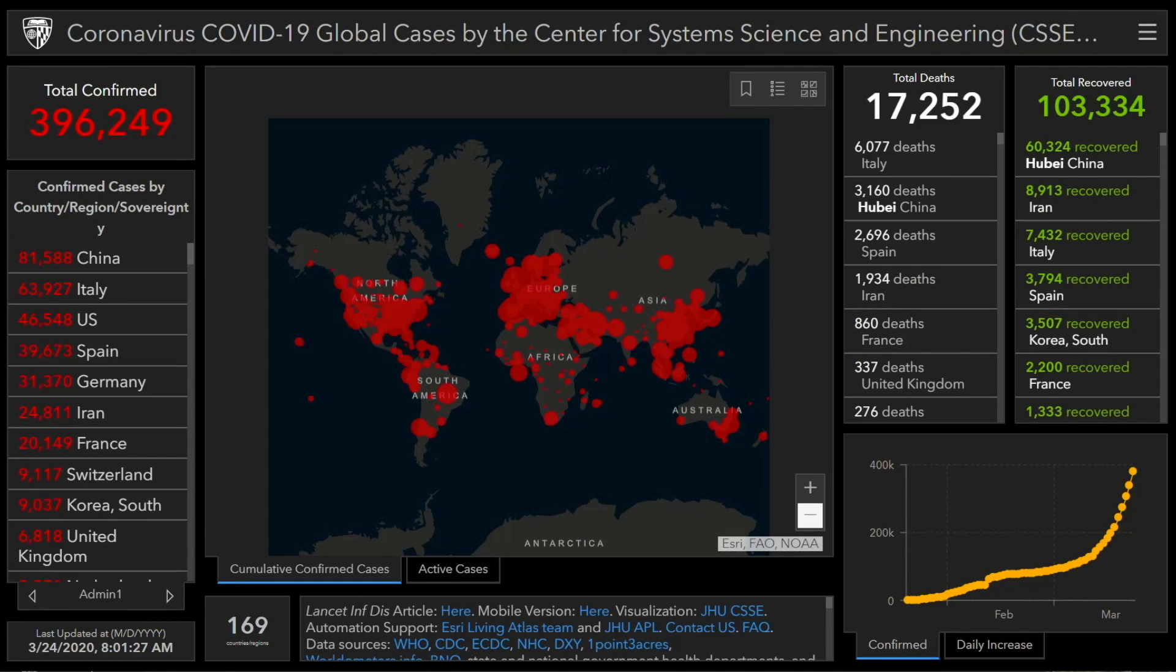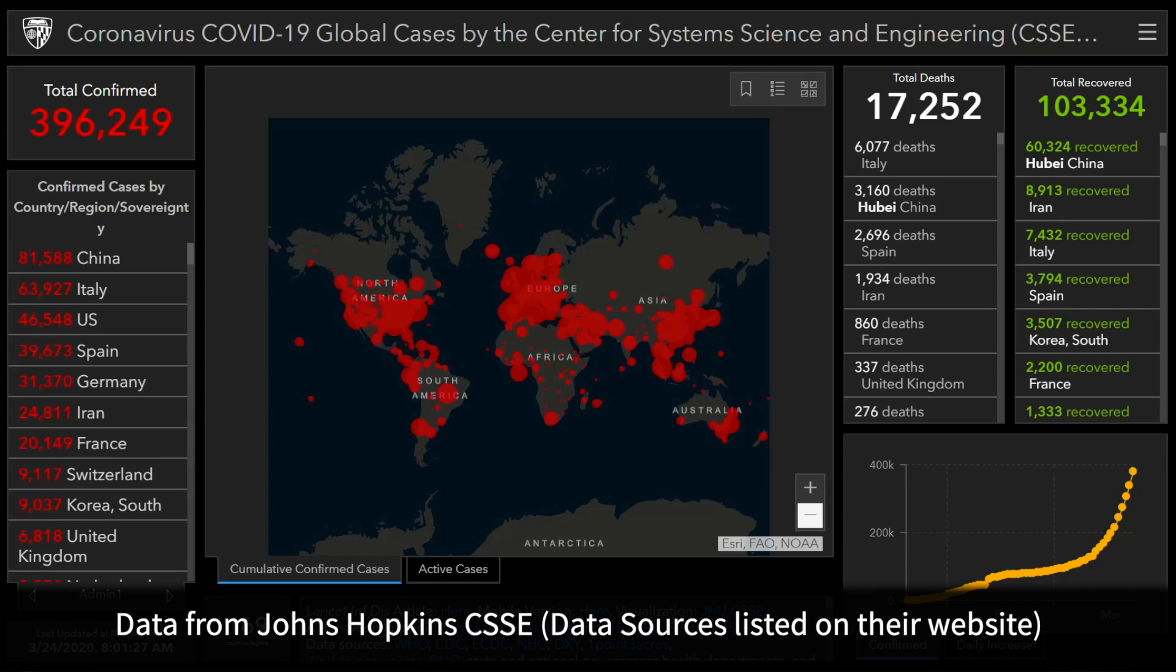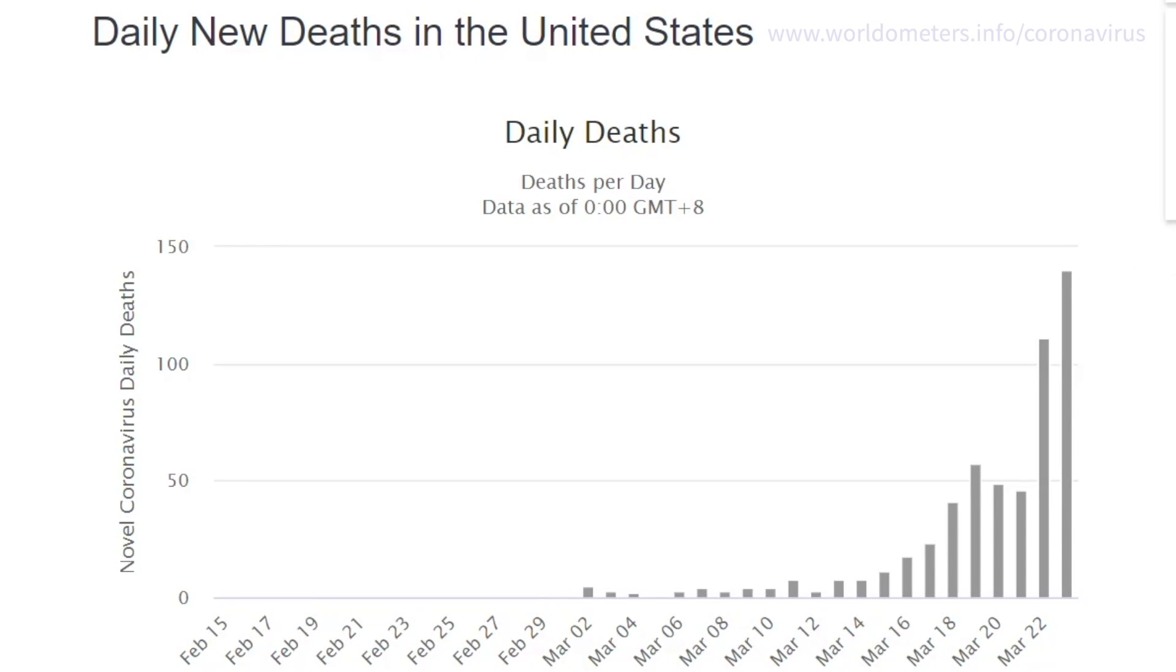MedCram.com. Welcome to another MedCram COVID-19 update. We can see that we're almost at 400,000 total confirmed worldwide. If we look here at the new daily deaths in the United States, we can see that that is increasing.